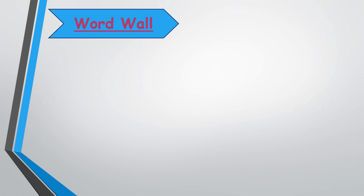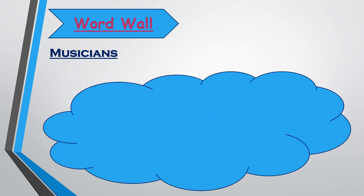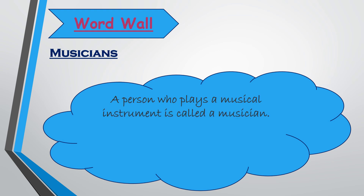The first exercise is word wall. It is related with musicians. A question might be arising in your mind: who is a musician? A person who plays a musical instrument is called a musician. Like a piano is a musical instrument. A person who plays the piano is a pianist — P-I-A-N-I-S-T. So a person who plays the piano is a pianist.